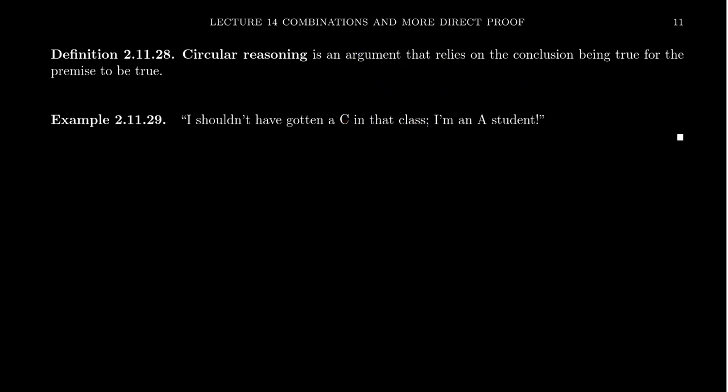And so an example of circular reasoning that I really, really love, because I've actually heard this said by students before, something like the following, I shouldn't have gotten a C in that class. I'm an A student. I want you to realize how this is an example of circular reasoning. If you were in fact an A student, then you wouldn't have got a C. So the fact that you got a C means that you're not an A student. Of course, what they're trying to say here is that they've received A's in the past, and therefore that means they should get A's in the future, in which case, if they were to reframe it, I would then go back and talk about the gambler's fallacy there. That past experience doesn't tell you what the next experiment's going to be.